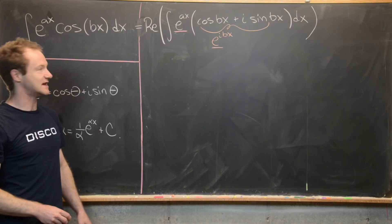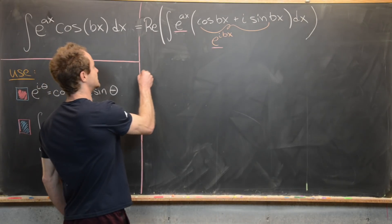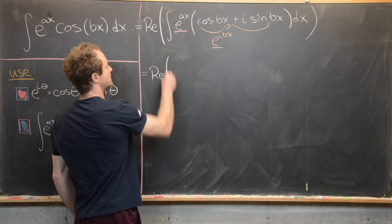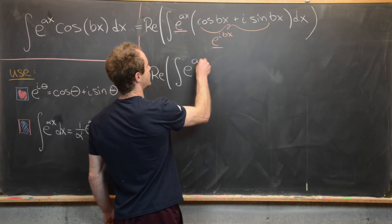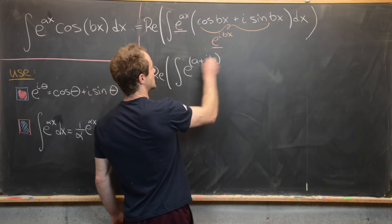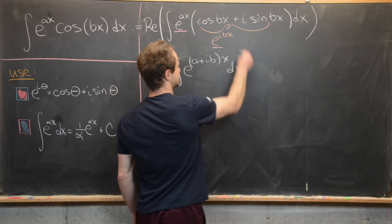If you multiply two things with the same base, you just add the exponents. So that's going to give me the real part of the antiderivative of e^((a+ib)x)dx.